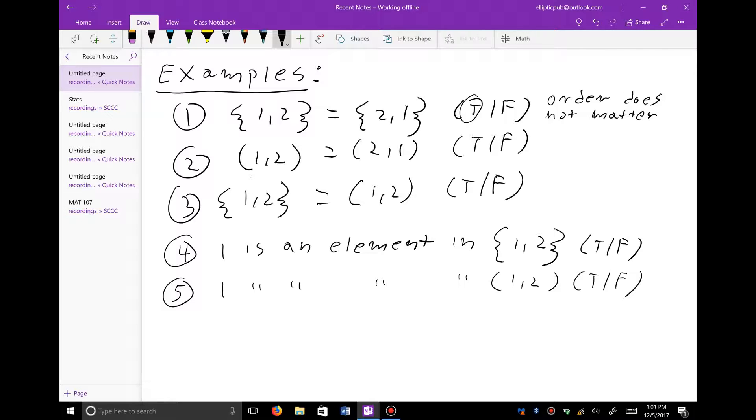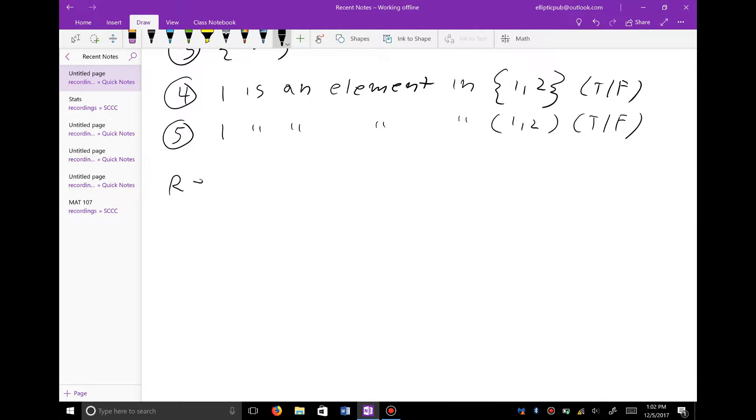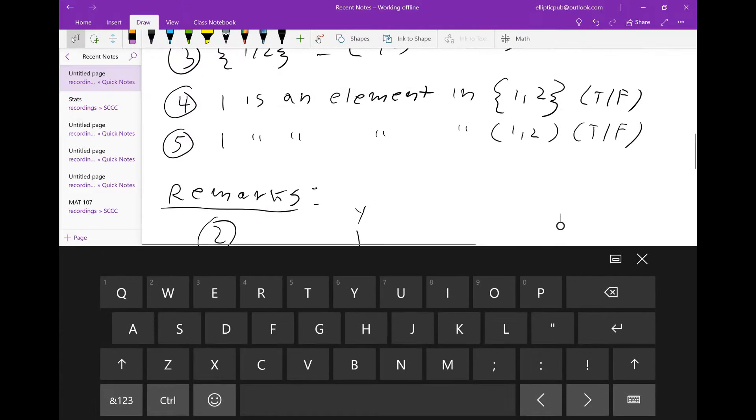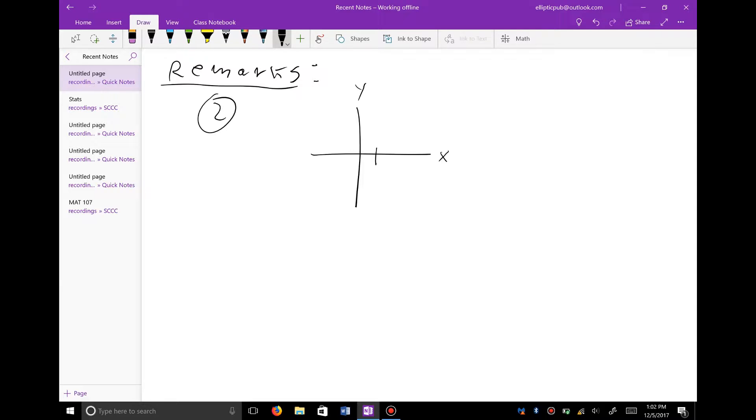But if you look at these two ordered pairs, here one comes first and then two, followed by two coming first and then one, order does matter. In fact, if we look at number two, if we were to use the Cartesian coordinate system that everybody should be familiar with from high school and junior high school, if we were to plot one comma two on this coordinate system, we would get this point here.